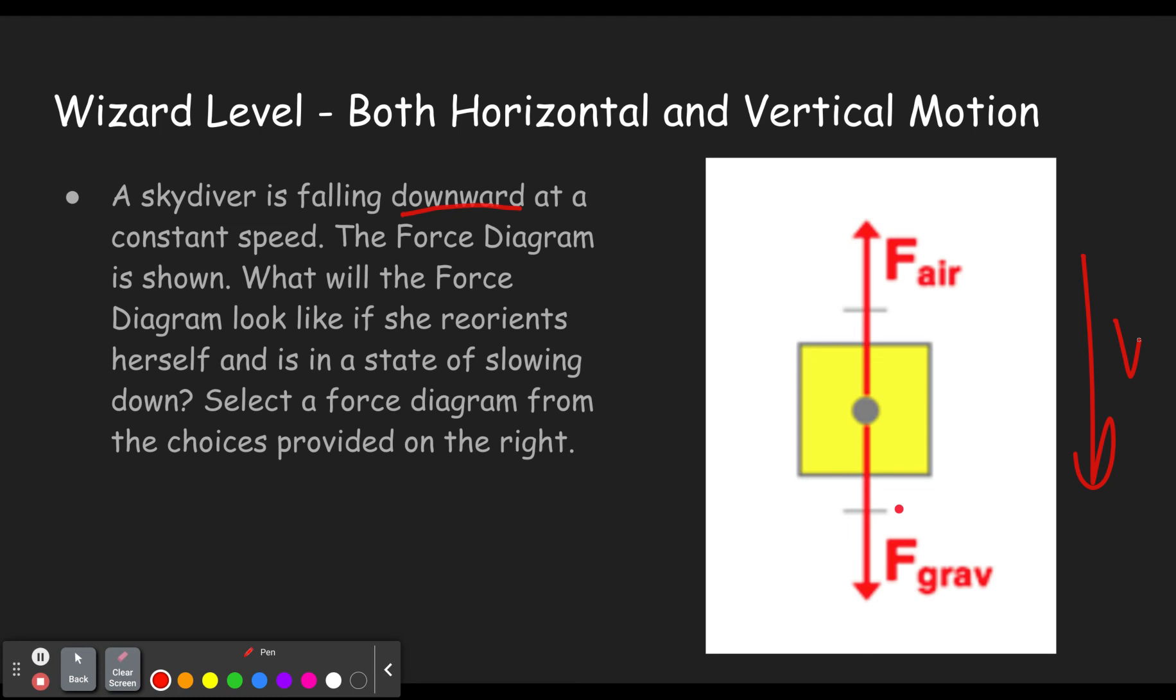The force diagram is shown. What will the force diagram look like if she reorients herself and is in a state of slowing down? So she was like, you know, arms at her side, barreling down, you know, like in mission impossible to try and catch the person below her. And now she's caught up to them. So she spreads her arms out and she hits a lot of air, or maybe she pulled a parachute. Who knows? But it says she reorients herself and is in a state of slowing down.